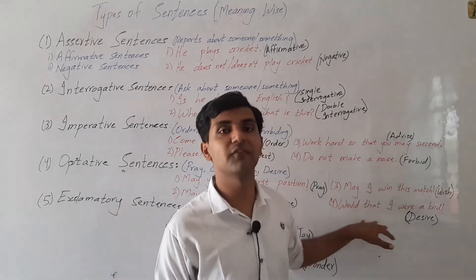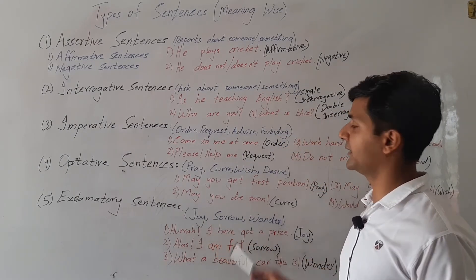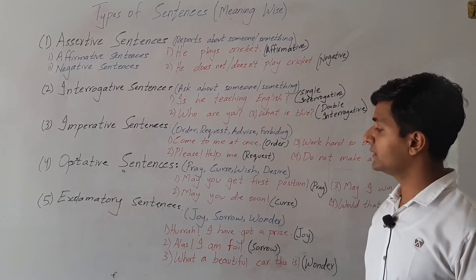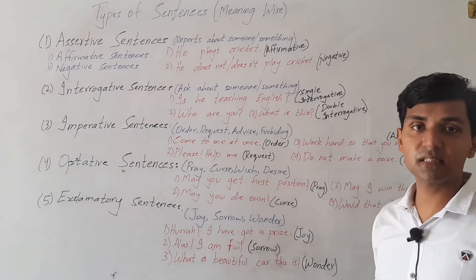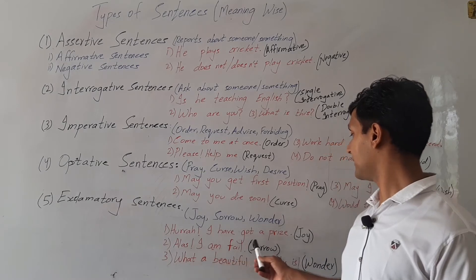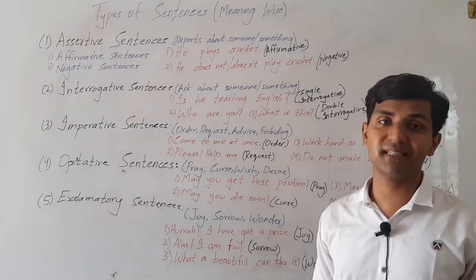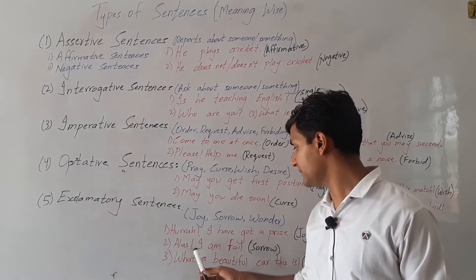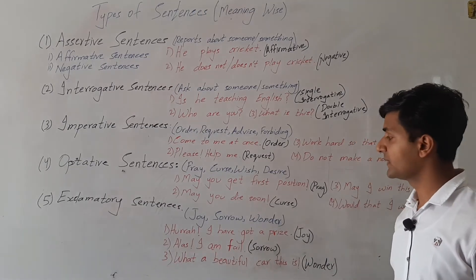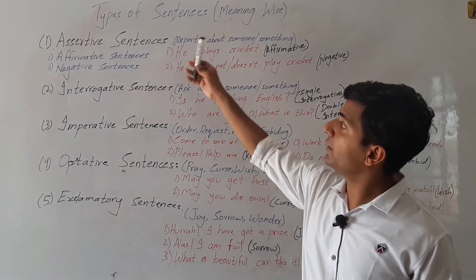Then dear friends, we have exclamatory sentences. In exclamatory sentences there is joy, sorrow, and wonder. 'Hurrah! I have got a prize' — the person who has got a prize is feeling happy and expressing his joy. 'Alas! I am failed' — if some person has failed a task, it's sorrow. 'What a beautiful card this is!' or 'What a beautiful watch you have!' — these show wonder.